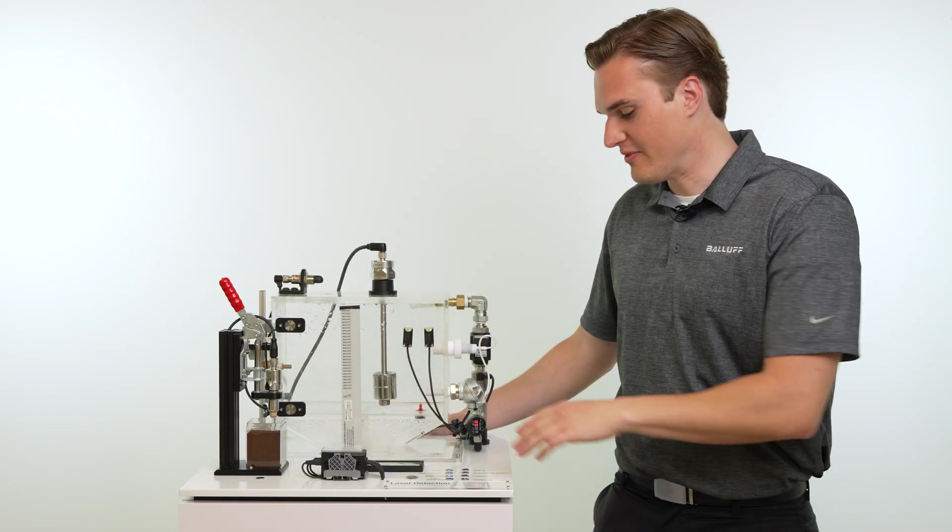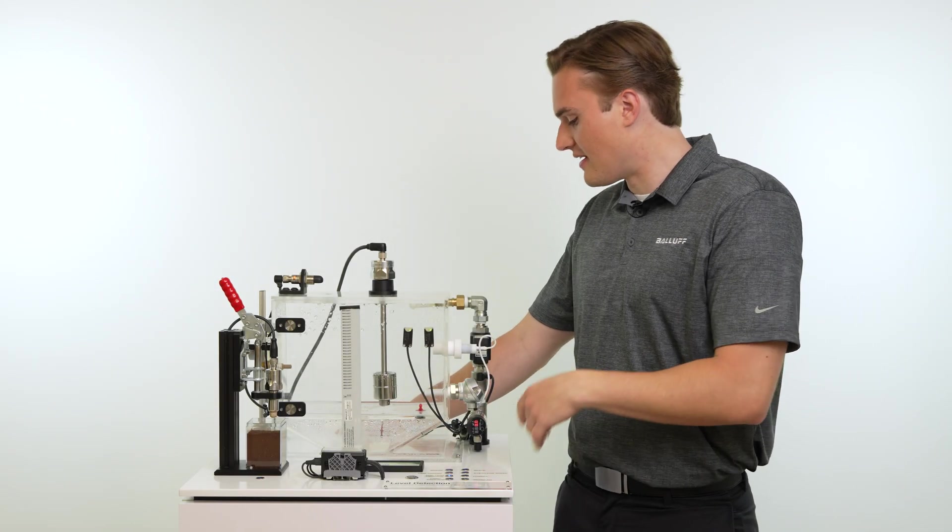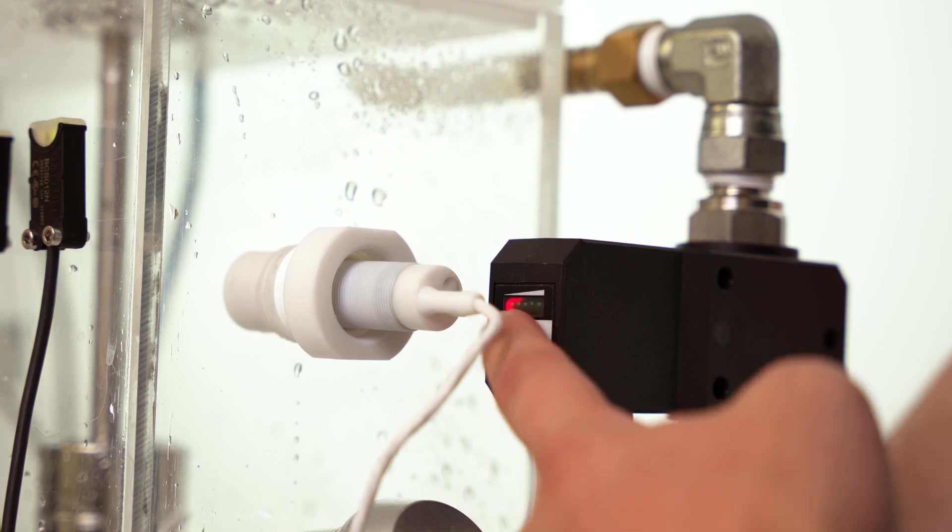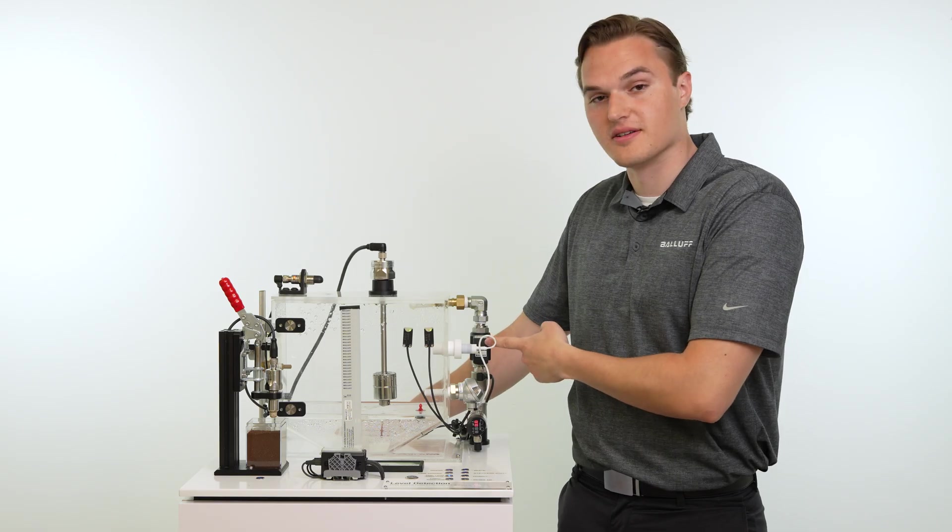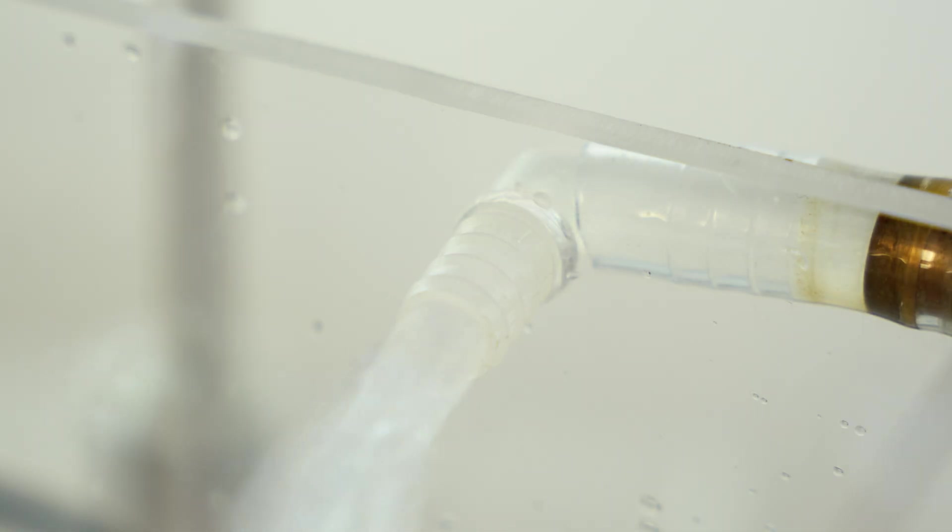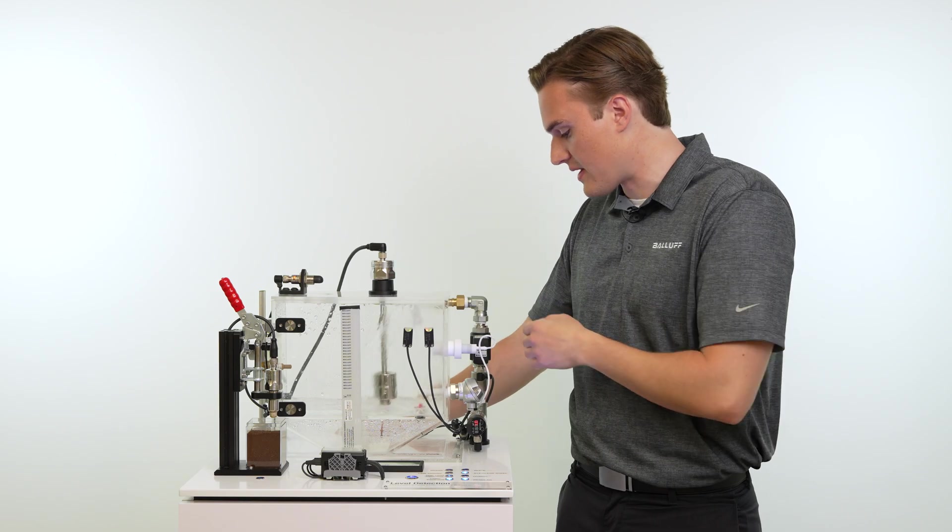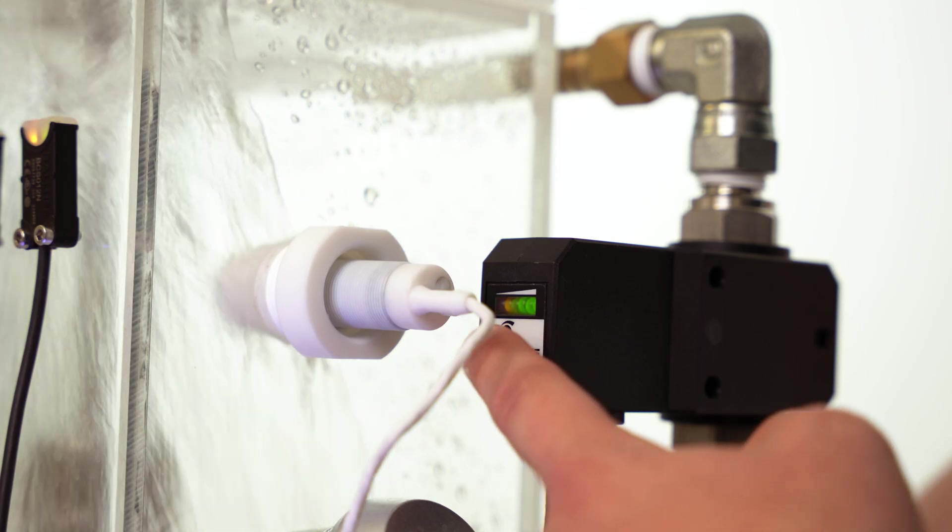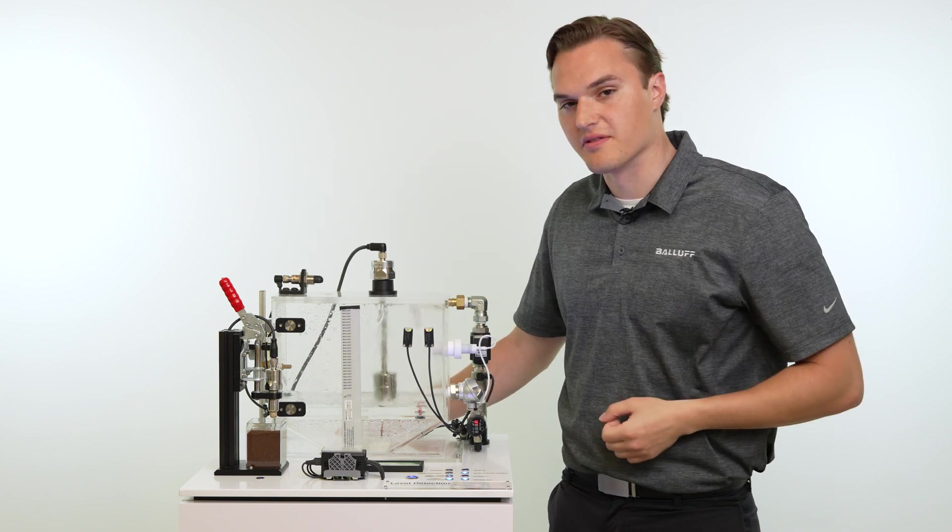Let's go ahead and see this in action. Before I turn the demo on, I'll point out that we have a variable flow meter here. As you can see right now it's not giving us any output, there's no flow. As I turn on the demo the pump activates, flow goes through the pipes, and now we can start to see a few things happening.